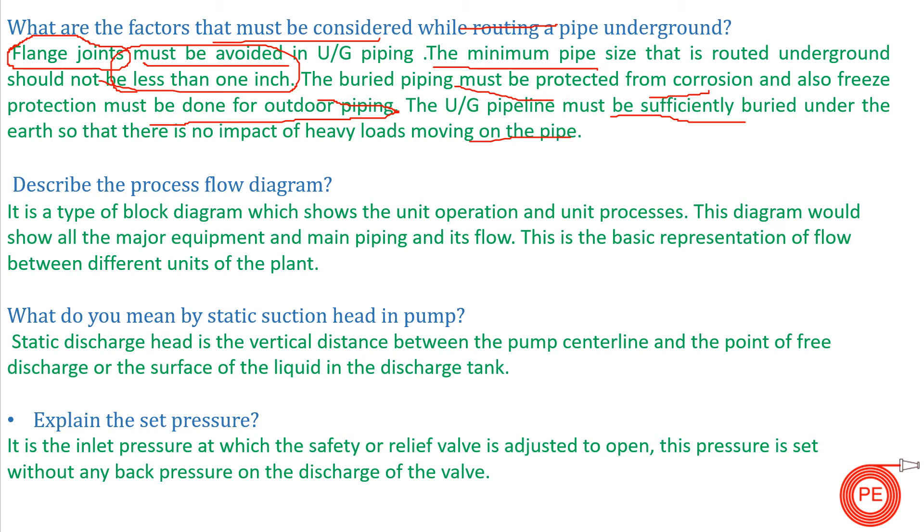Describe the process flow diagram. Process flow diagrams are the basic drawings or one of the first drawings that we prepare when we start engineering for any process industry. It shows the unit operations and unit processes. All the units or processes are shown in one sheet and linked with arrows. On those arrows, we mention the flow, and generally it tells the brief sequence of the flow that how the flow will take place in the plant. This is the process flow diagram, originally known as PFD in the industry.